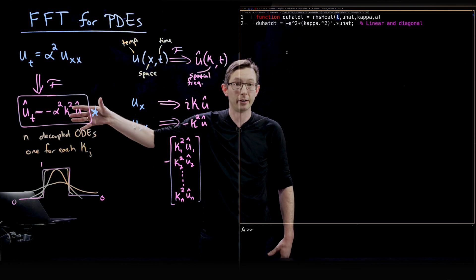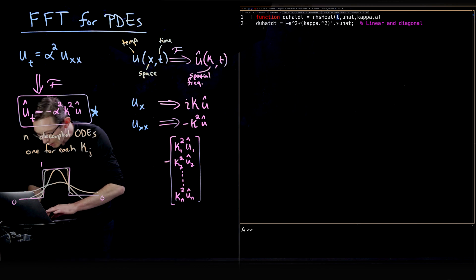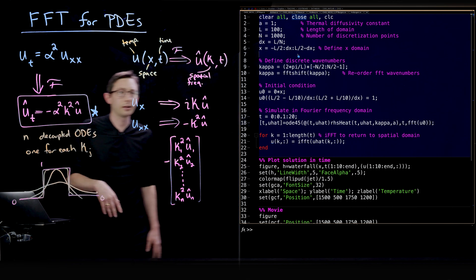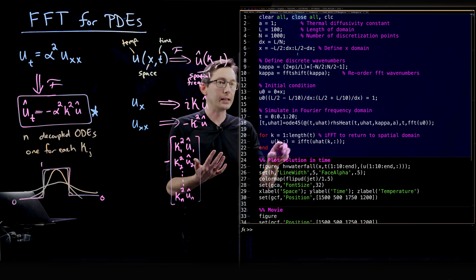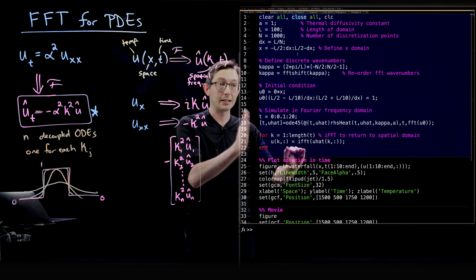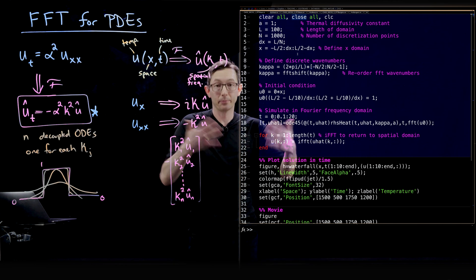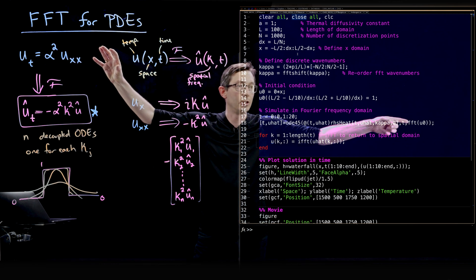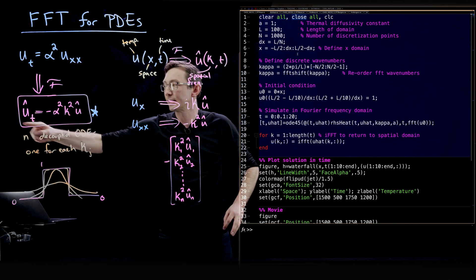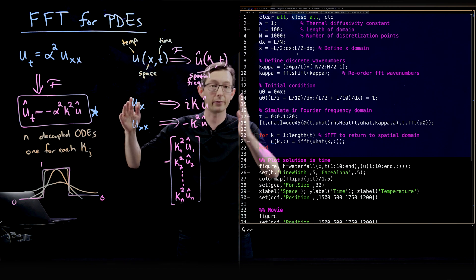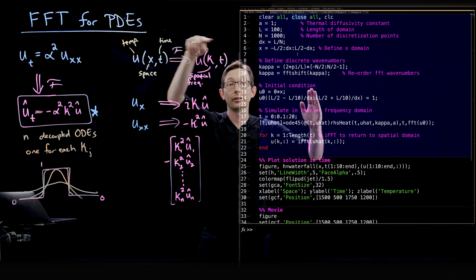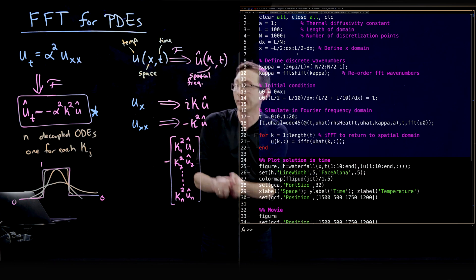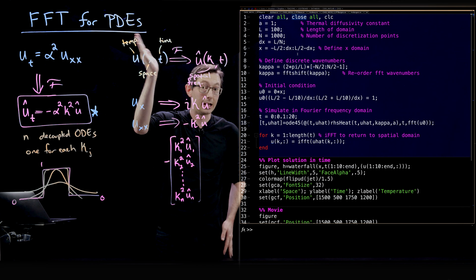This is a diagonal system of ordinary differential equations — really nice. We go back to the code, run it. In lines 20 through 22, we take the solution at each time snapshot and inverse Fourier transform it to recover u in space for plotting. Essentially: take initial condition u-knot, FFT it, simulate in the Fourier domain using ODE45, then inverse FFT to get the spatial solution at each point in time.